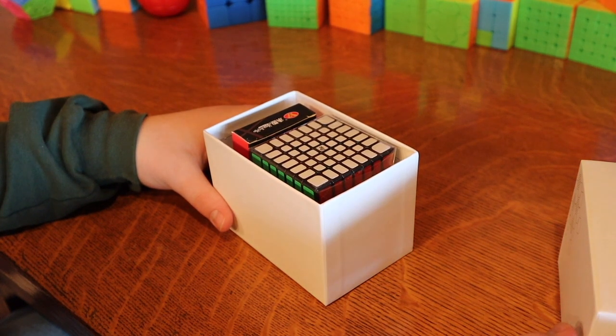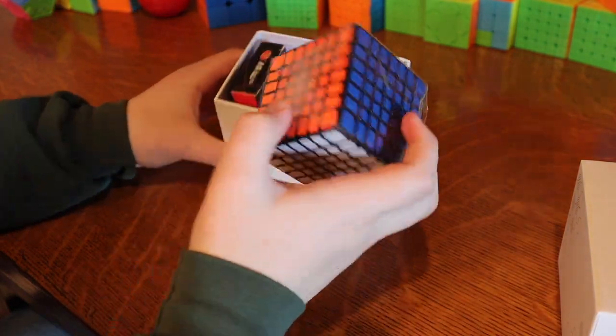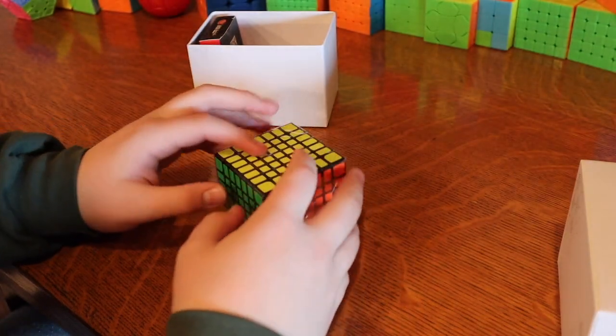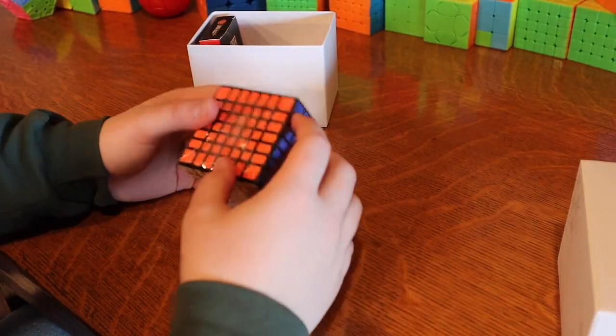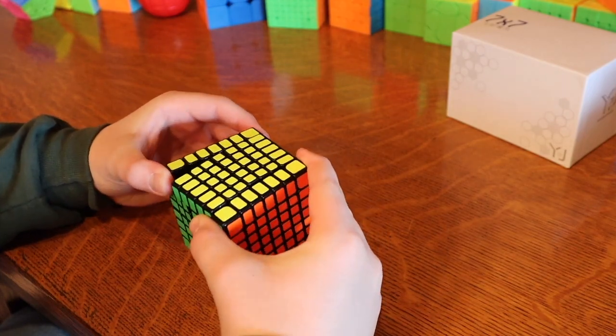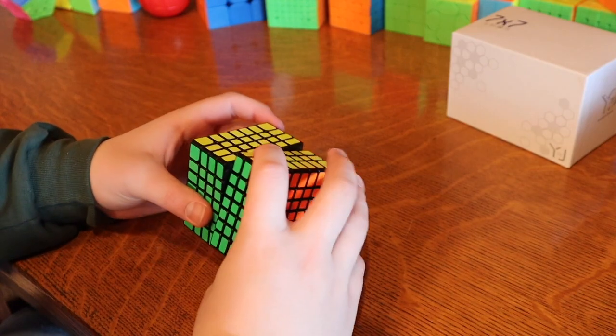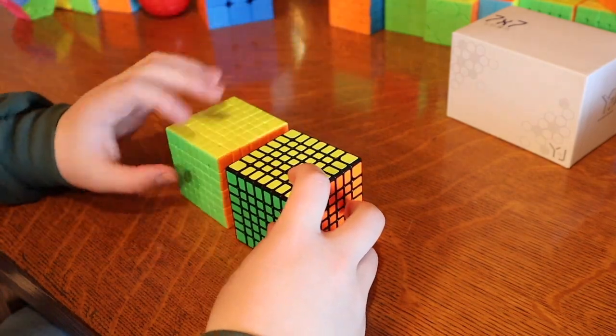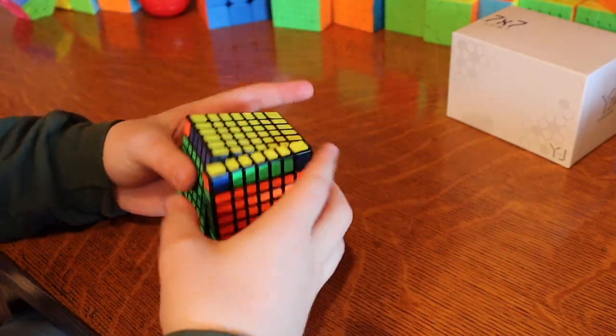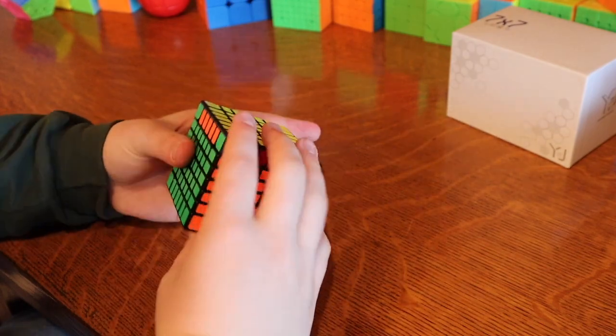It's stickered. Okay. I forgot about stickered cubes. Oh my gosh. I'm trying to decide if I'm disappointed or not because on one hand I have a duplicate of a 7x7 I already have, but on the other hand I have two 7x7s, which is pretty cool. I wasn't expecting it to be stickered though. That's kind of not preferable.